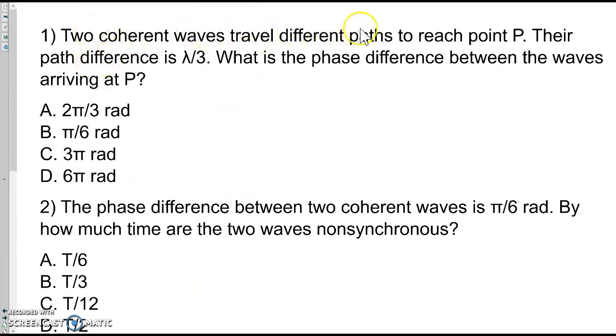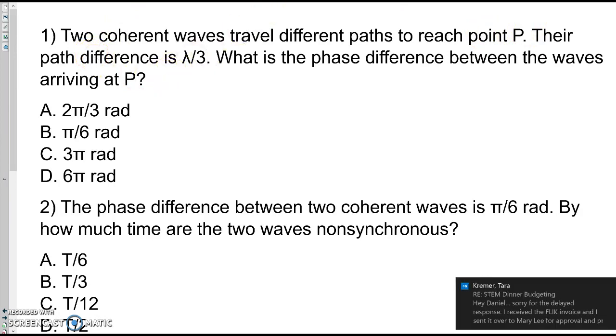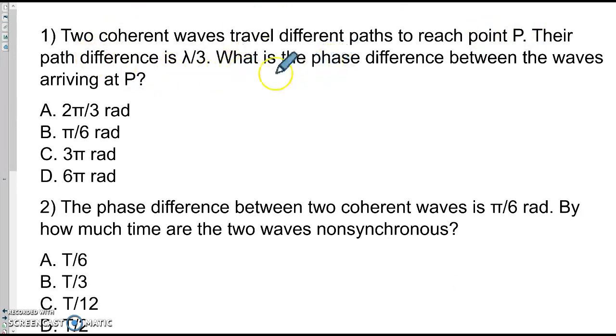Two coherent waves travel different paths to reach point P. The path difference is lambda over 3. What is the phase difference between waves arriving at P? So we're starting with path difference. We're trying to get the phase difference. You can think of this as a converting problem. We're going from number of wavelengths to some number of radians. So just convert the units. We start with lambda over 3.